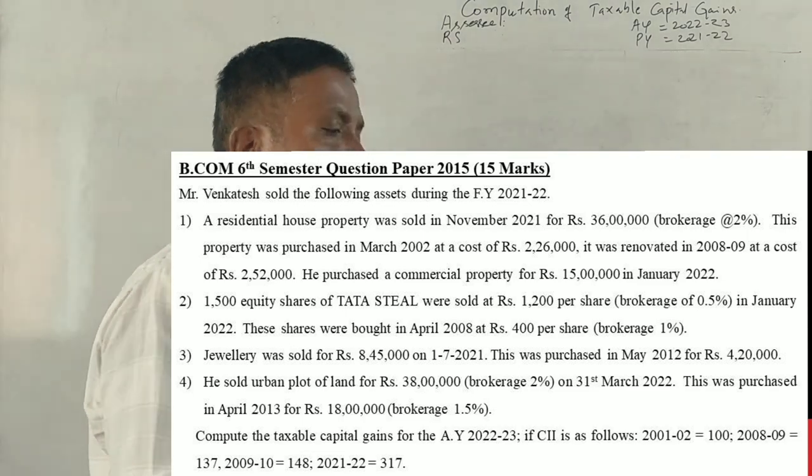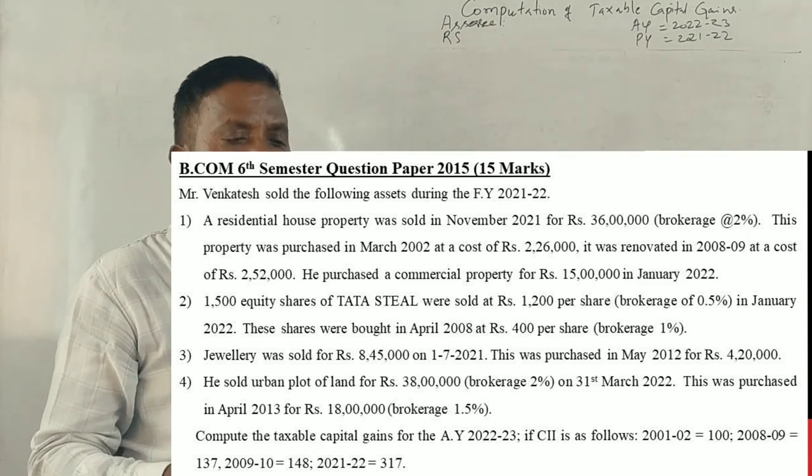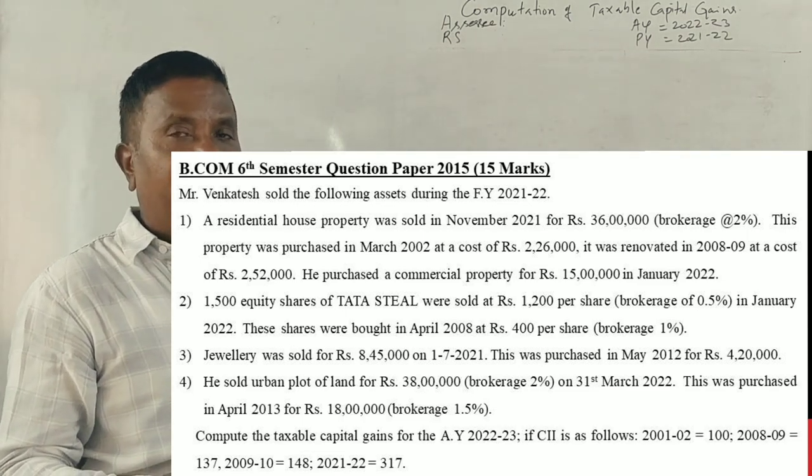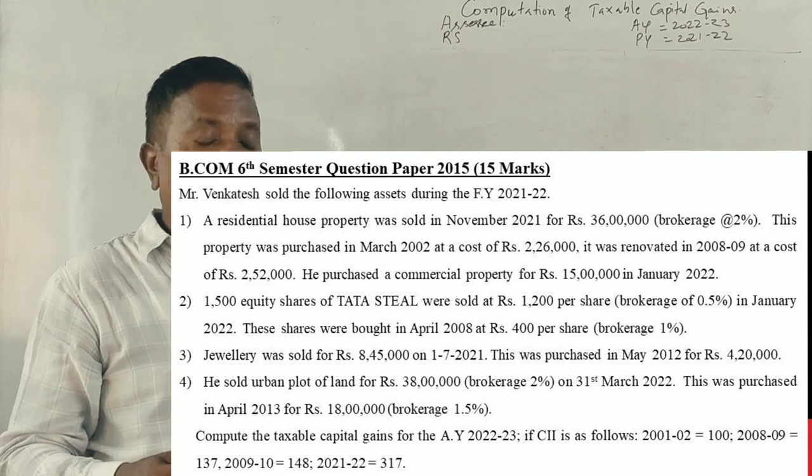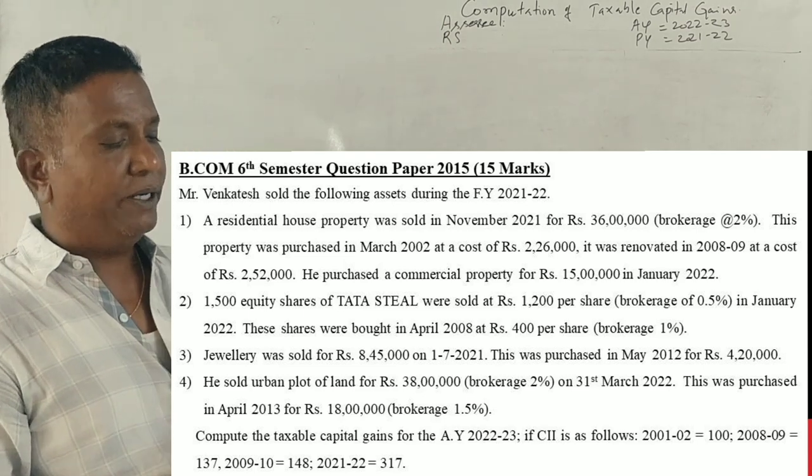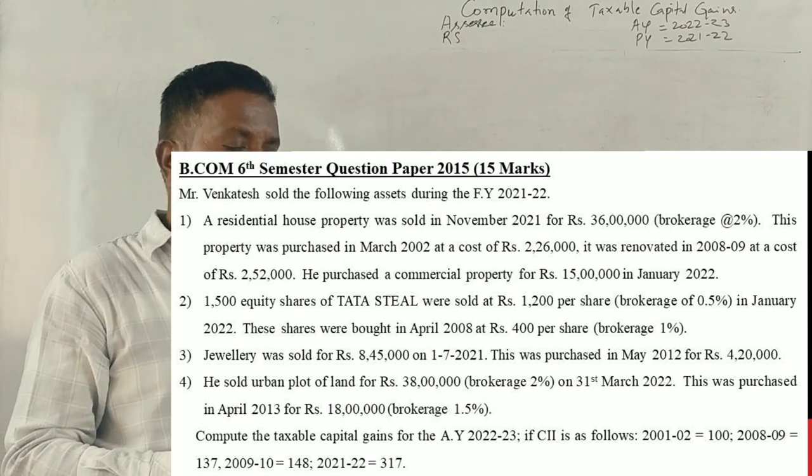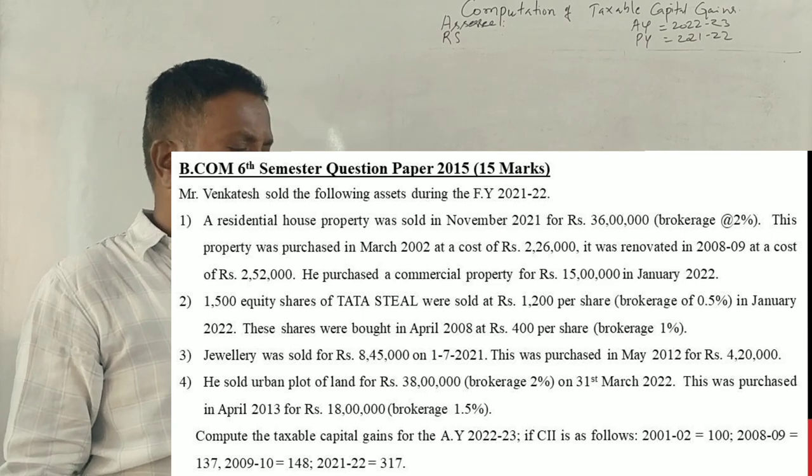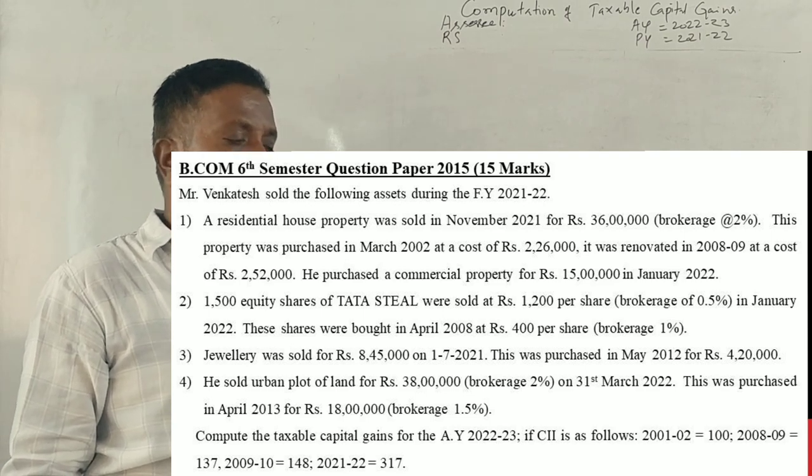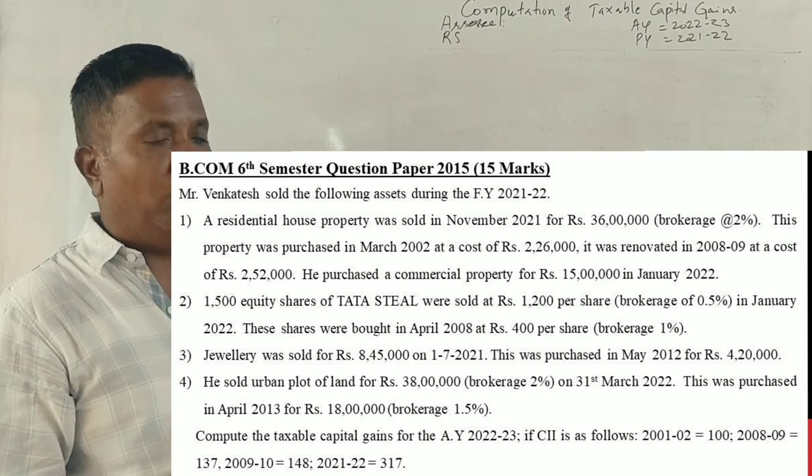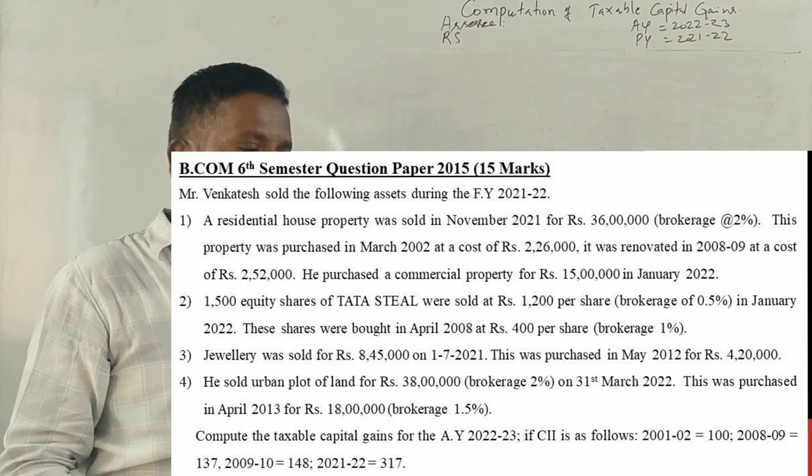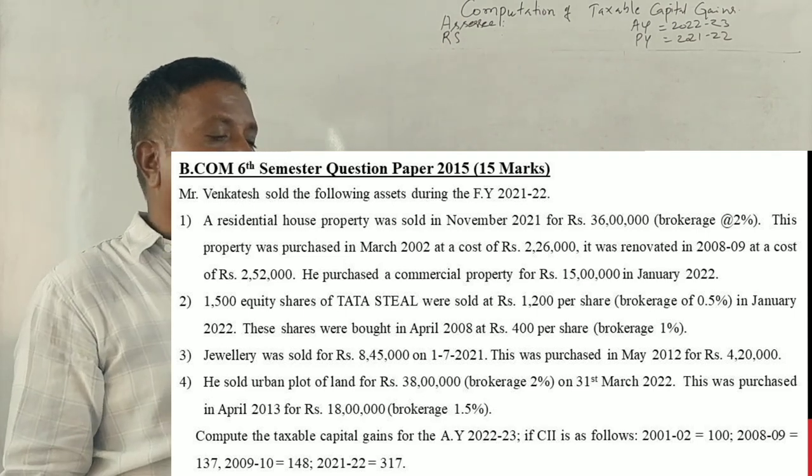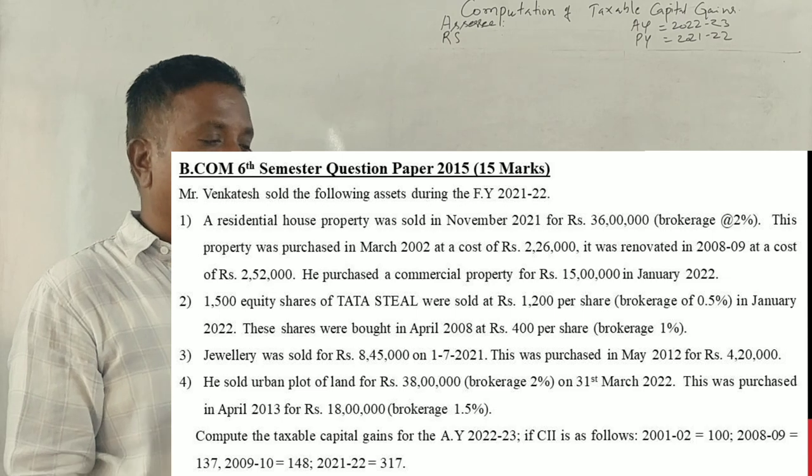This is a 15 mark question from the 2015 B.COM semester question paper. Mr. Venkatesh sold the following assets during the financial year 2021-22. A residential house property was sold in November 2021 for 36 lakhs with 2% brokerage. This property was purchased in March 2002 at a cost of 2.26 lakhs and was renovated in 2008-09 at a cost of 2.52 lakhs.